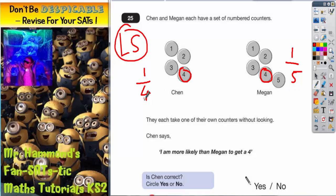Now then, 1 out of 4, a quarter and a fifth, you might find difficult to compare. So, you might want to convert them into percentages. A quarter is basically 25% chance for Chen of getting a 4 and Megan, a fifth, is 20% chance of getting a 4.